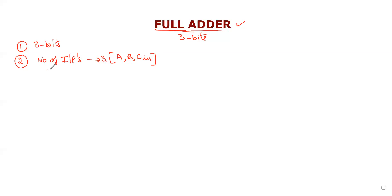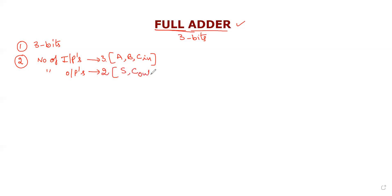We can also identify the number of output variables. When we add three bits, the outputs are sum and carry. So we have two outputs: we define S for sum and C-out for carry out.